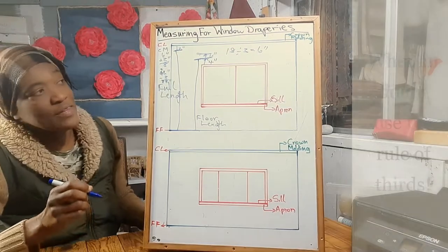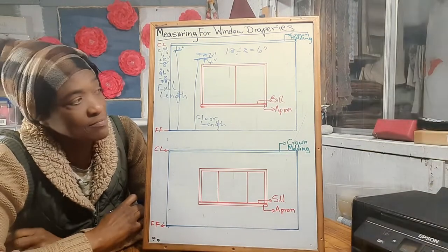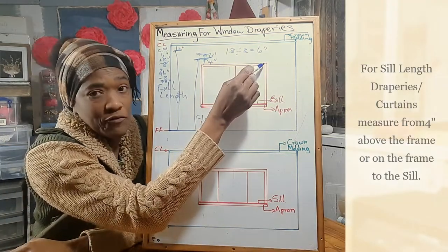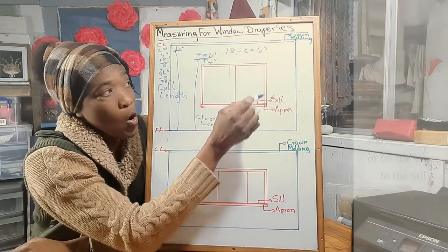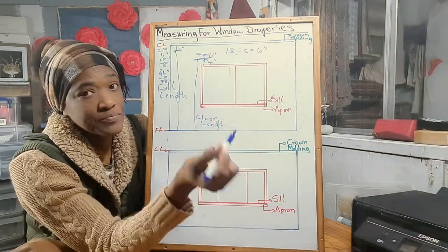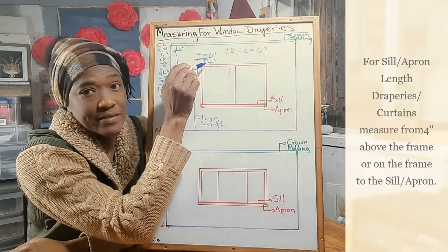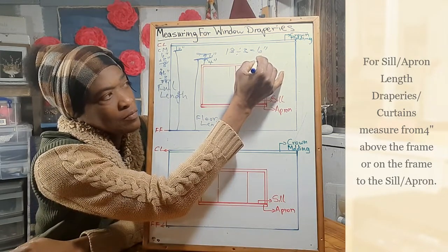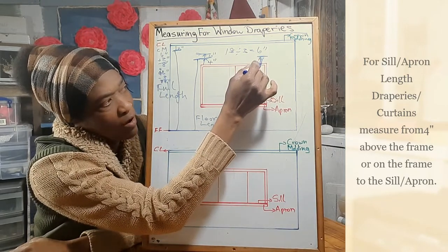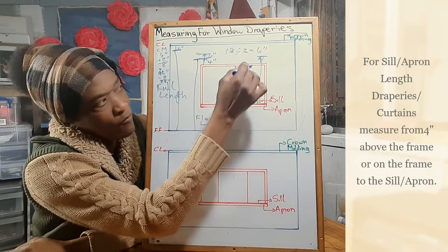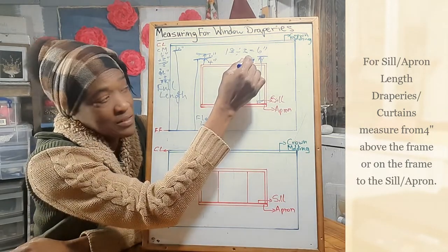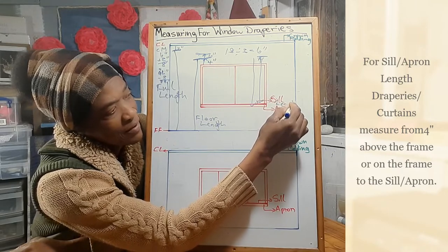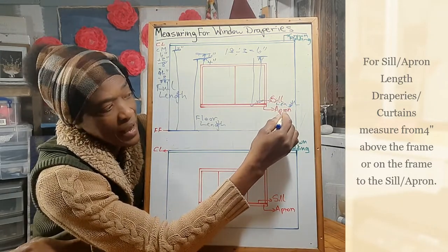Now let's look at sill length. Sill length could start from on the frame or above the frame down to your sill — it would be the same four inches above your frame that you start. For sill length, you go four inches above your frame and measure down to your sill. For apron length, you measure from the same distance down to your apron.